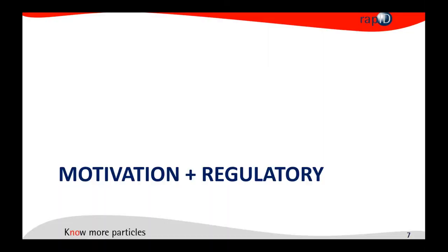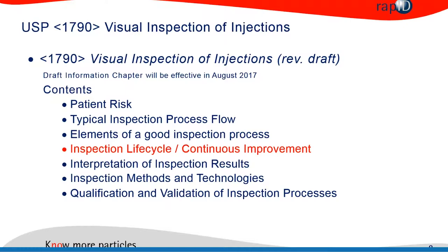Motivation and regulatory background: visual inspection was all stirred up by the phrase 'essentially free of visible particles.' Particles we all know are partially unavoidable, so the motivation was to make some sort of a scientifically based guideline for controlling them. One part of the USP 1790 is what we will be talking about today — the inspection life cycle and continuous improvement development — and it will be officially effective in August 2027.